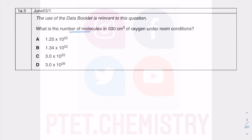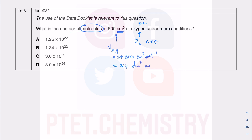In the third question, they ask for the number of molecules — be careful, molecules — in 500 cm³ of oxygen. Oxygen exists as O₂ at room temperature. Since we're talking about a gas, you need the molar volume of gas, which is 24,000 cm³/mol at room temperature and pressure — true for any gas.